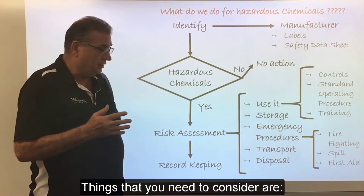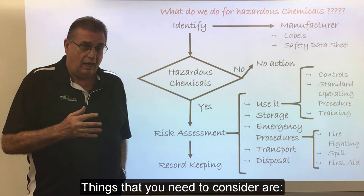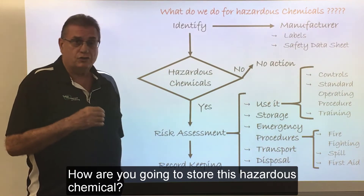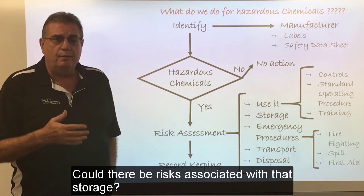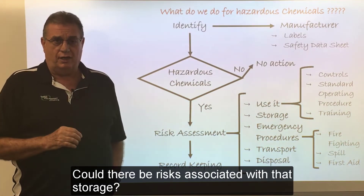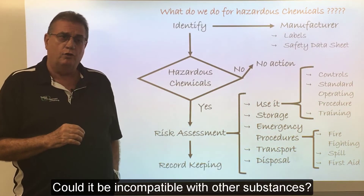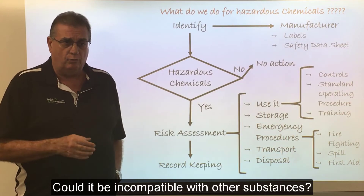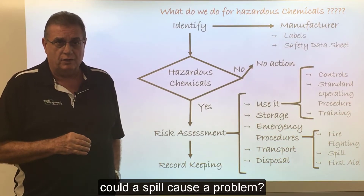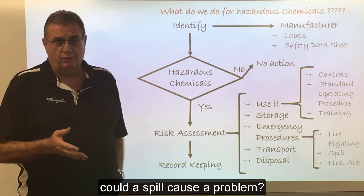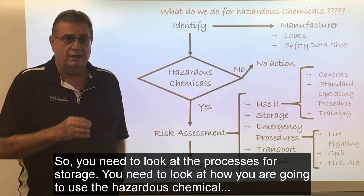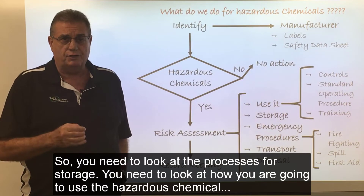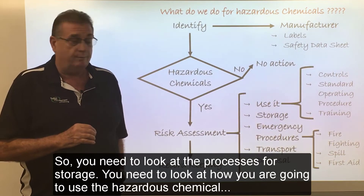Things that you need to consider include how you're going to store the hazardous chemical. Could there be risks associated with that storage? Could it be incompatible with other substances? Could a spill cause a problem? So you need to look at the processes for storage.